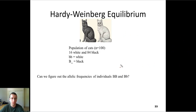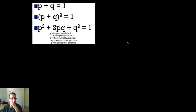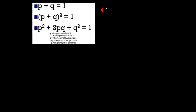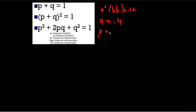We already determined that Q-squared, which stands for little b little b, is 0.16. So Q must be the square root of that, which is 0.4. Now, since P plus Q equals 1, P equals 1 minus Q. Since Q is 0.4, that means P equals 0.6. So 60% of the population is made up of big B alleles, and only 40% is made up of little b alleles.